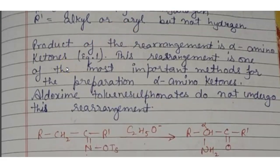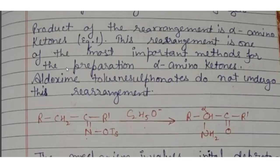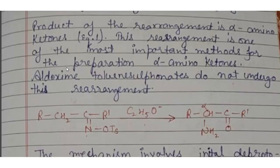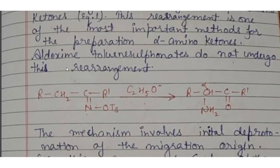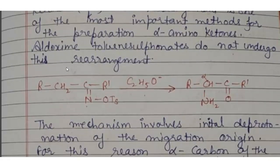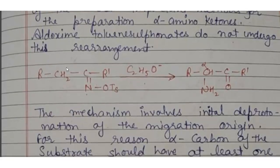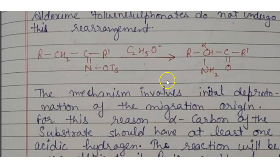Product of the rearrangement is alpha amino ketone. This rearrangement is one of the most important methods for the preparation of alpha amino ketone. Aldoxime toluenesulfonate do not undergo this rearrangement. Here you can see that reaction and it will form alpha ketoxime.